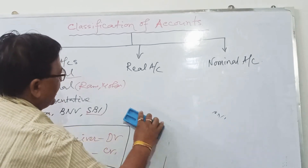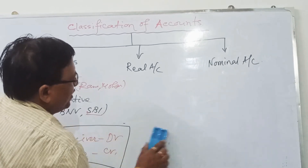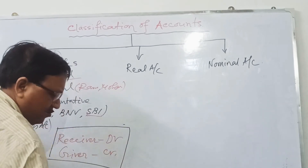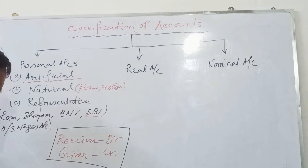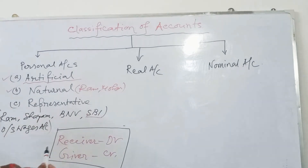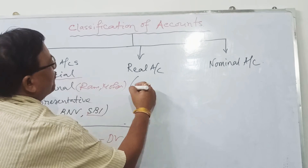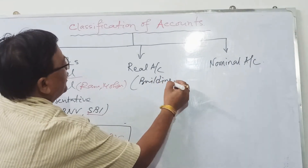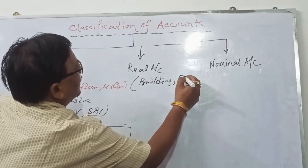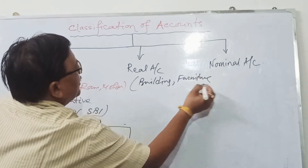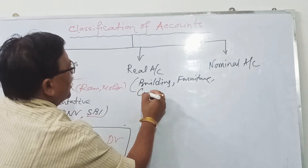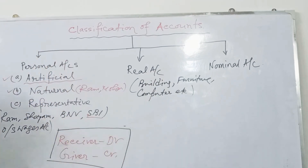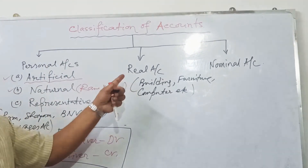The next account is real account. Real accounts are those accounts which have a physical form, or assets that are present in the organization. Examples of real accounts include building, furniture, and computer.